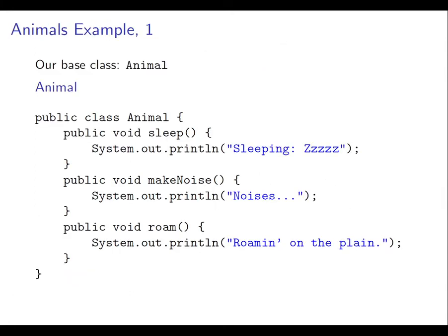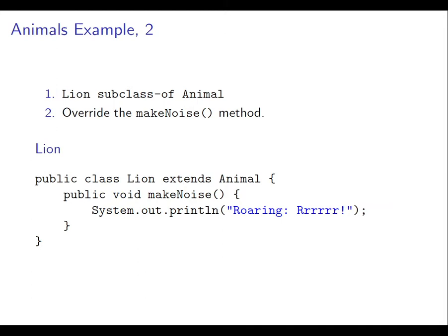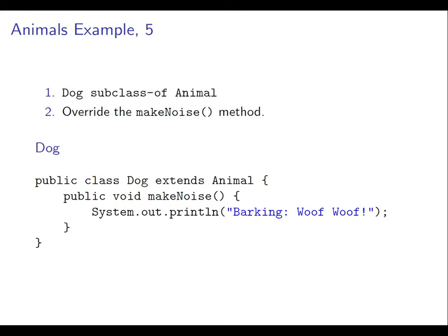We can have a base class Animal written in Java like this, and then we can have a subclass Lion. We have public class Lion extends Animal, which overrides the MakeNoise method and makes it do something different. And similarly, Cat can have a different version of MakeNoise, as can Wolf, as can Dog.